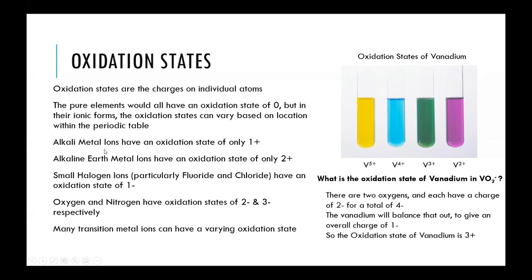Some basics: an alkali metal ion always has an oxidation state of zero or plus one; an alkaline earth metal has zero or plus two. The halides — fluoride and chloride — have an oxidation state of minus one, having gained one electron. Oxygen typically gains two electrons for a minus two oxidation state; nitrogen typically gains three electrons for a minus three oxidation state. Transition metals are where redox chemistry really gets interesting because they can have multiple different oxidation states.